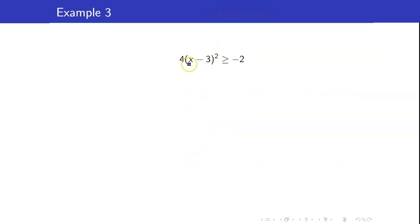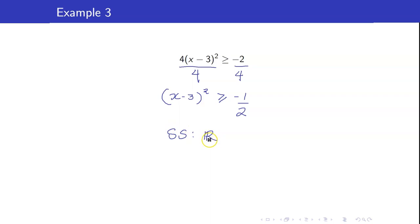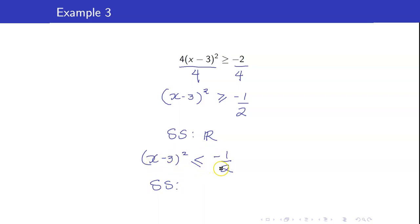Another similar example: dividing both sides by 4 gives (x minus 3) squared greater than or equal to negative one half. Again, the solution set is the set of all real numbers because the square of a number is always greater than or equal to zero. Now, just in case, suppose we had (x minus 3) squared less than or equal to negative one half — what would the solution set be? This cannot happen because the square of a number is always greater than or equal to zero. This is impossible, so the solution set would be the empty set.